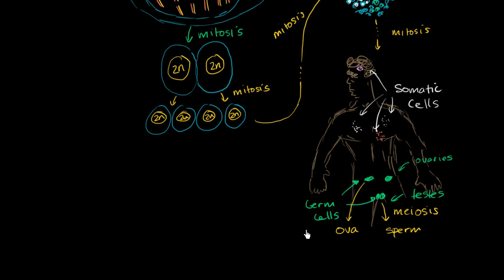This brings up a really interesting point, because throughout biology we talk about mutations and natural selection. It's important to realize how mutations may affect you and your offspring. If you have a mutation in one of the somatic cells — in a skin cell, your brain, or your heart — that may affect your ability to reproduce, especially if it's something dangerous like cancer. But if this is happening in a somatic cell, it's not going to affect the DNA makeup of what you pass on. The DNA makeup of what you pass on is determined by what's going on in the gametes.